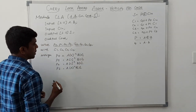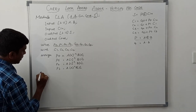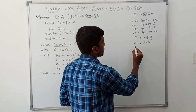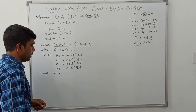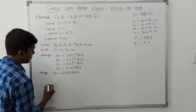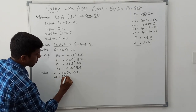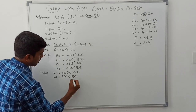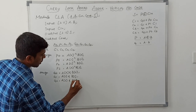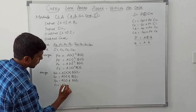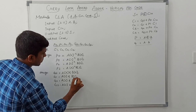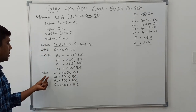Then I go to find the generation signals. The formula is G = A AND B. So: assign G0 = A[0] & B[0]; assign G1 = A[1] & B[1]; assign G2 = A[2] & B[2]; assign G3 = A[3] & B[3]. Now we have found the generation values.